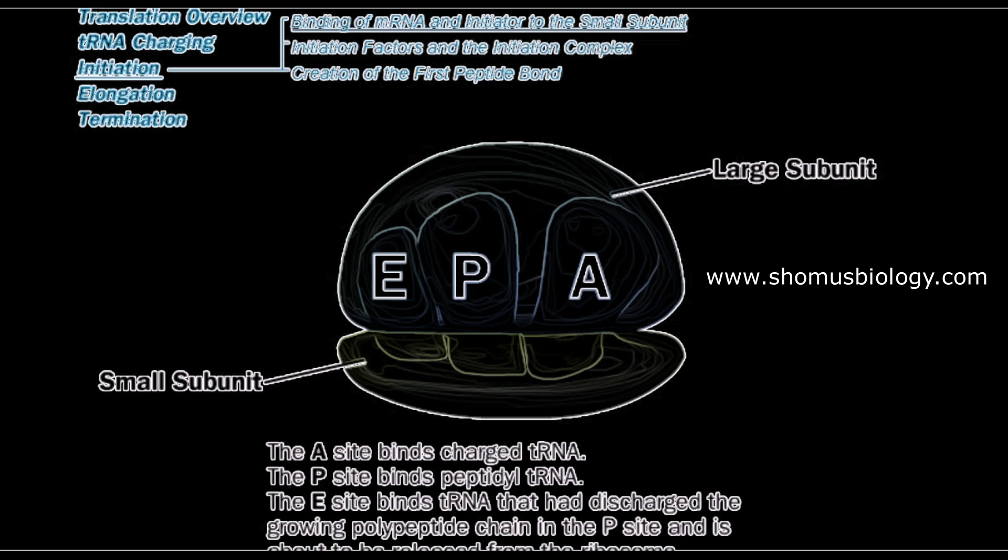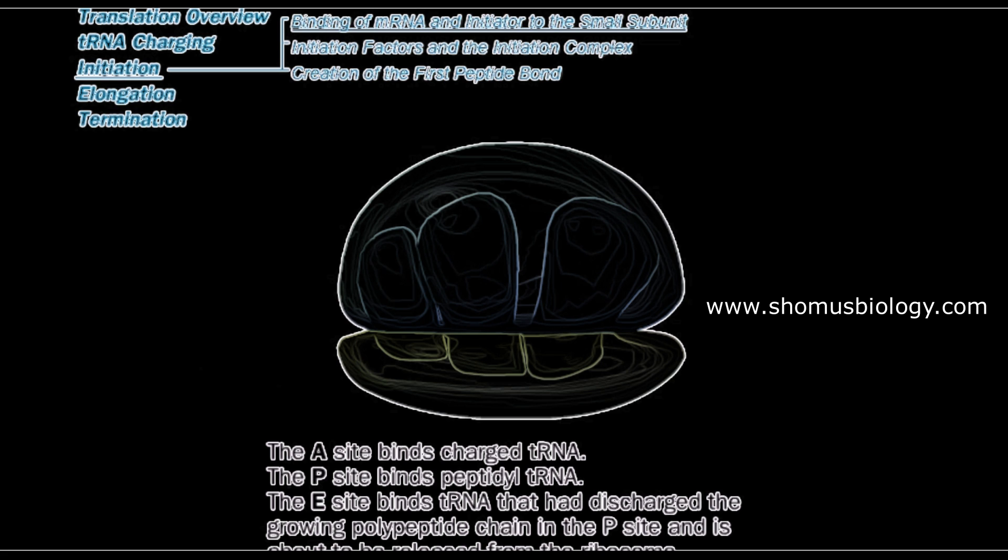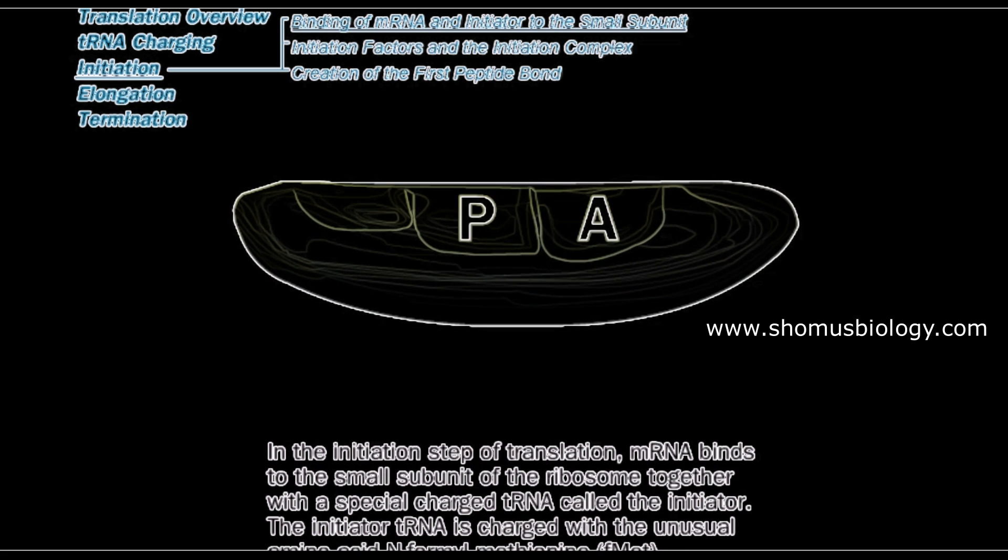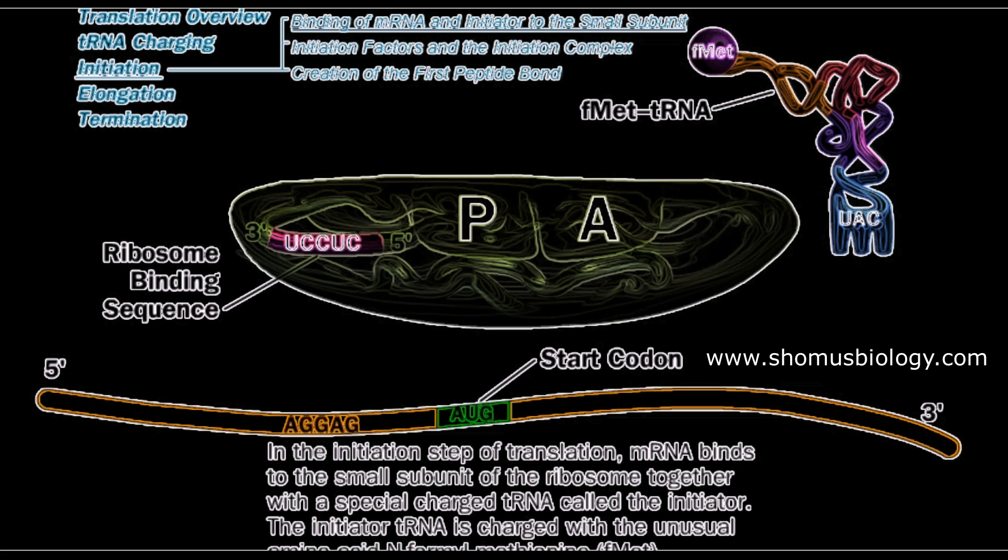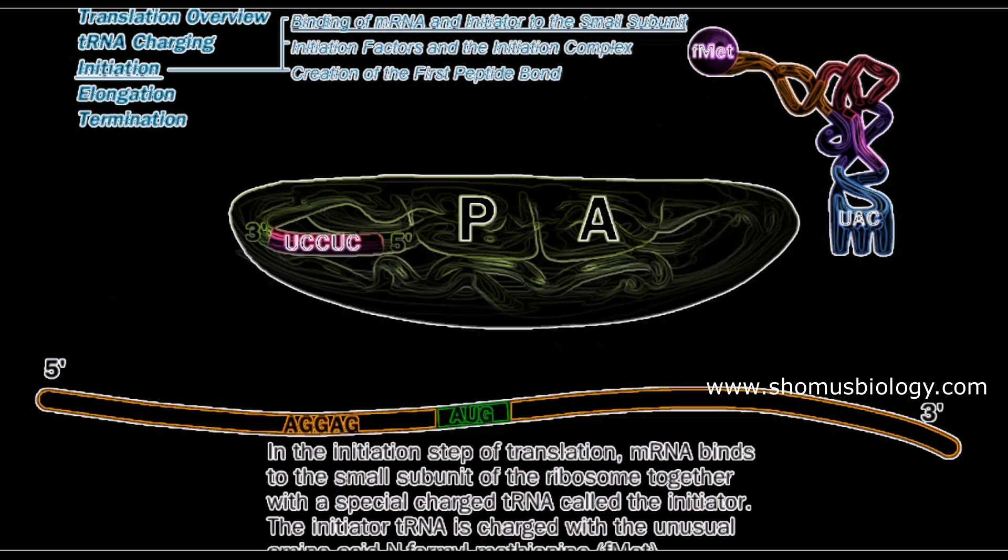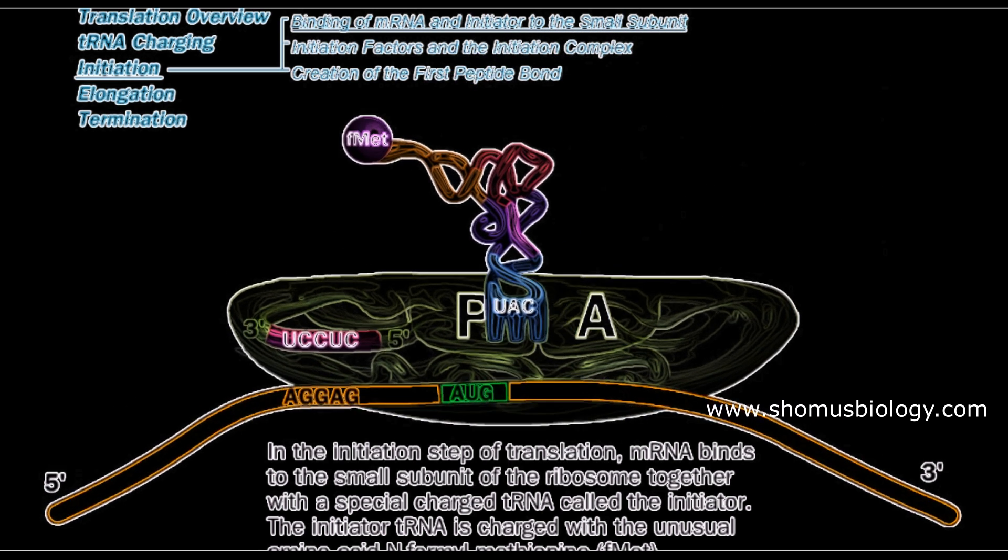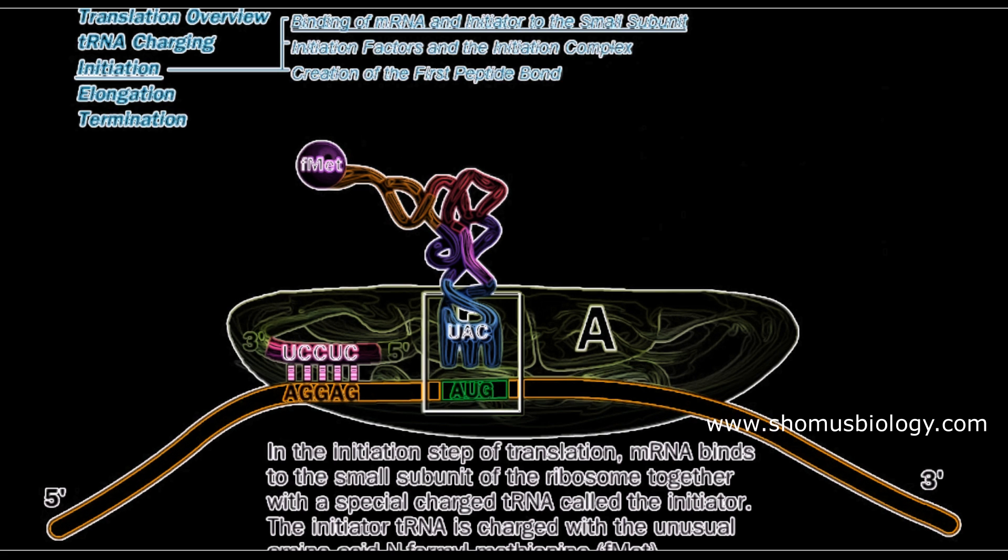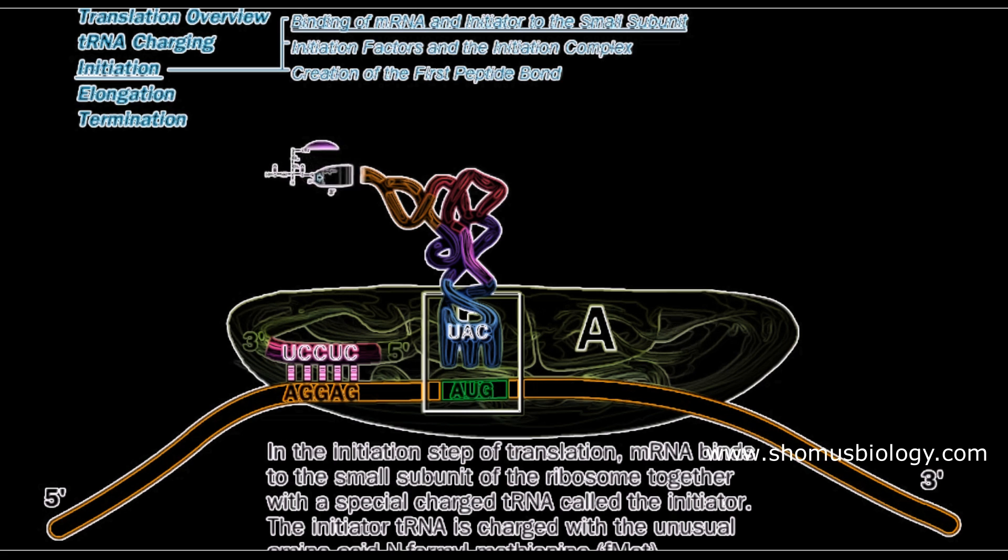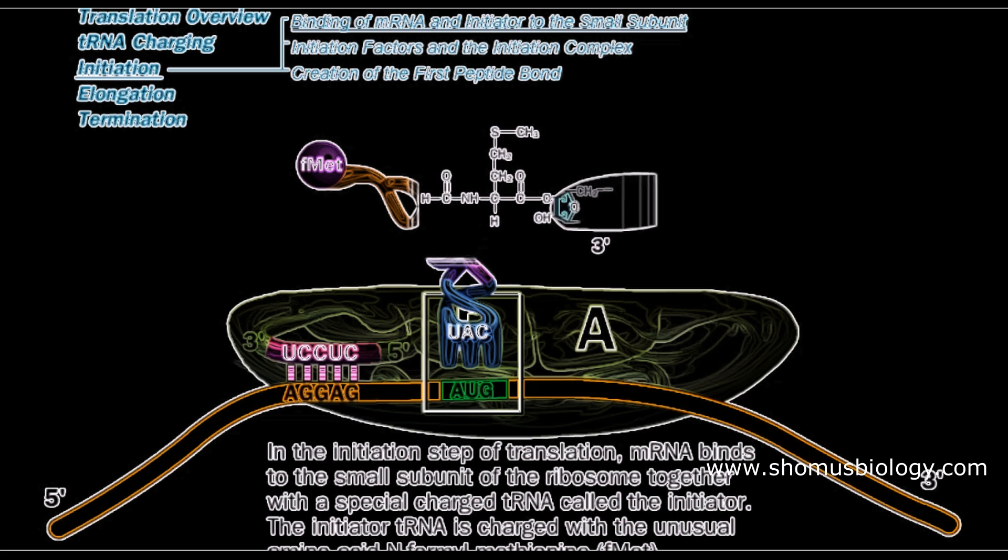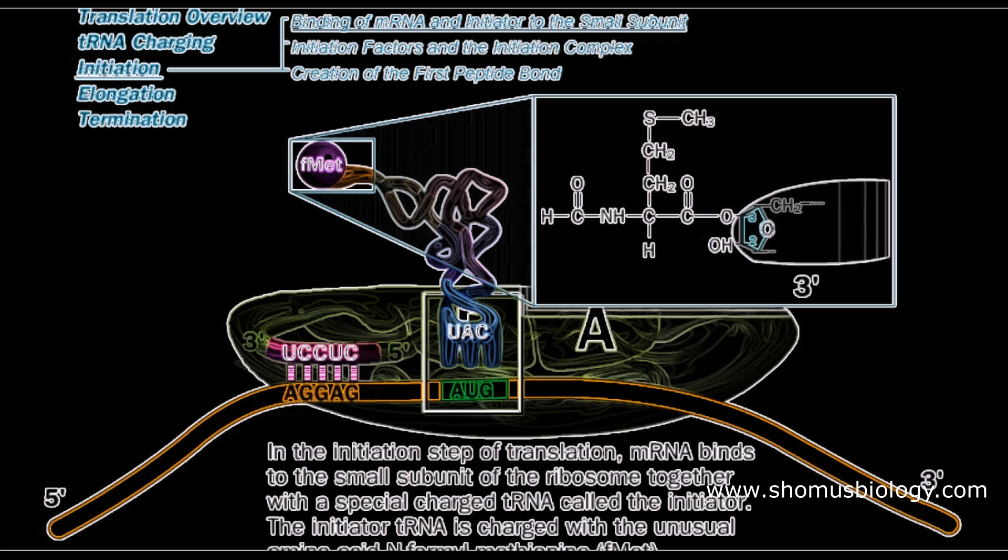These subunits are not always assembled during the process start point. The A site binds to the charged tRNA, P binds to peptidyl tRNA, and E binds to the tRNA that has discharged the growing polypeptide. This is the small subunit—it has P and A site—and we have this particular ribosome binding sequence in the 16S rRNA of the small subunit that interacts to the complementary region upstream of the start codon in mRNA.